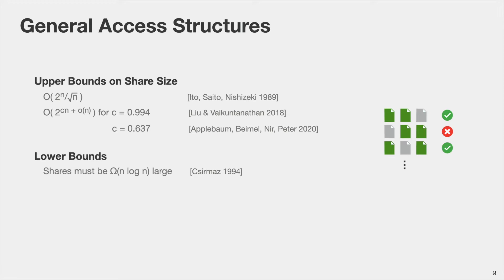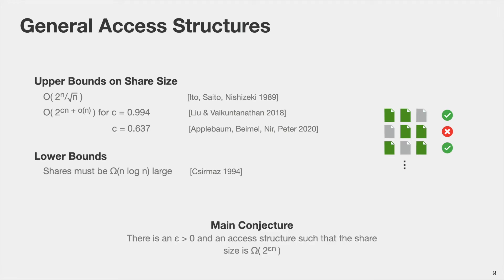In terms of lower bounds, the best we have is a lower bound from 1994 which shows that there exists some access structure for which every share has to be of size at least n log n. There is a very large gap between the best known upper and lower bounds, and the current main conjecture is that there exists some constant epsilon and some access structure such that the share size has to be exponentially large — specifically 2 to the epsilon times n.